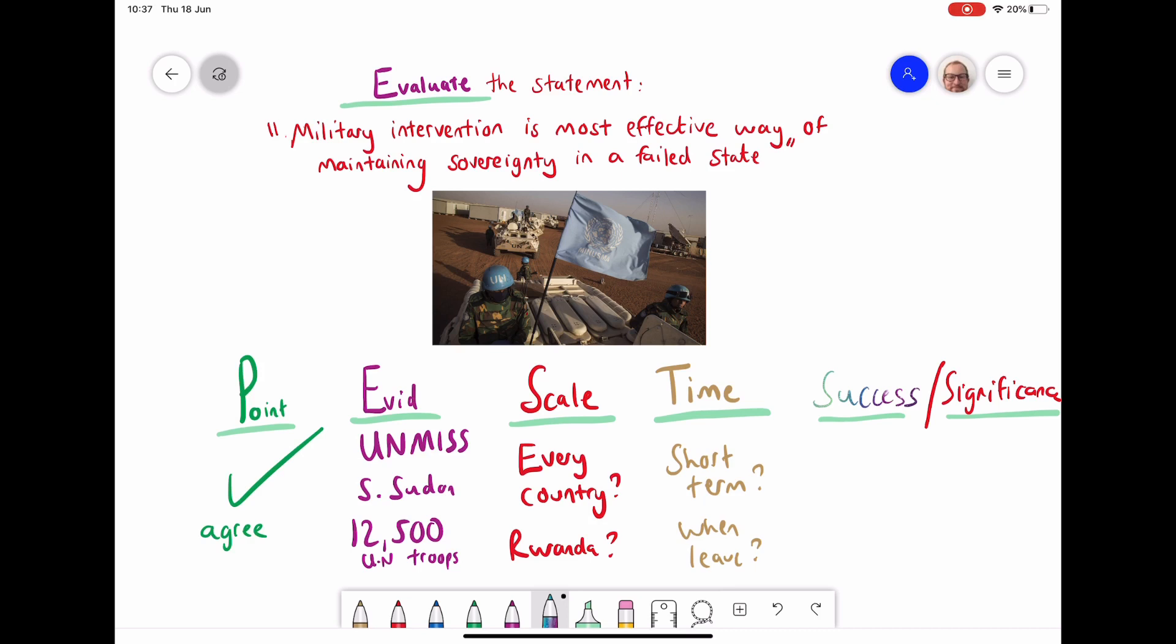And lastly, you could, building on that last point, say, well, where you have the UN there not just as a military force, but as a kind of force that is there to build up democratic institutions and where we have free and fair elections, that is probably a better and more successful way of maintaining sovereignty over a longer period of time. So that is just one point in which I have broken down into scale, time, success and significance.